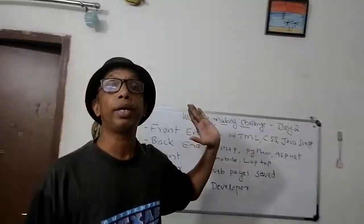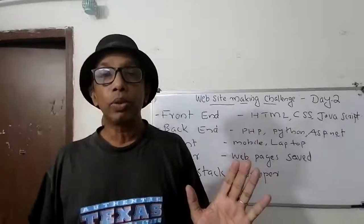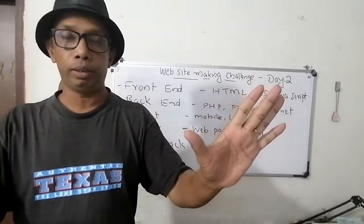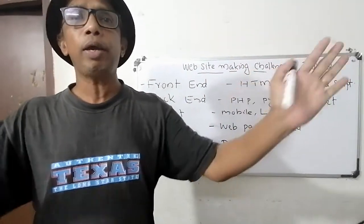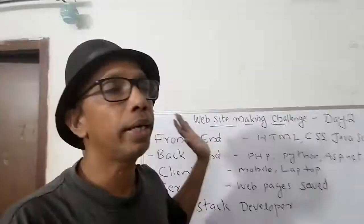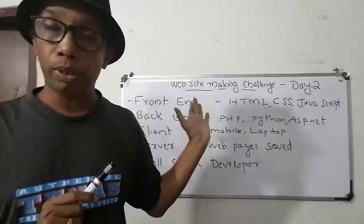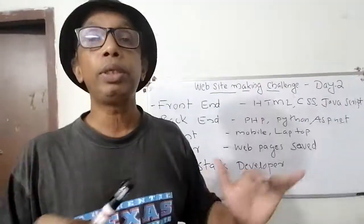What is the frontend? What is the backend of the website? Frontend means what we are seeing on the website — that we can call the frontend. Suppose when you open the website, we can see the text, images, everything. So what we can see on the website, we can call it the frontend. To make the frontend, we should know HTML, CSS, and JavaScript. With this code, we can make the frontend.